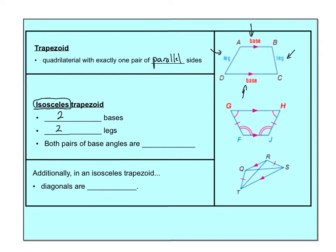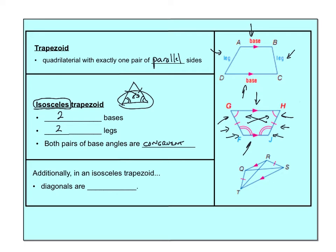An isosceles trapezoid — for those who don't recall, isosceles means two sides are equal, like an isosceles triangle where the base angles are equal. It's a similar idea here: my two legs are congruent, which means my opposite base angles are congruent. And only in an isosceles trapezoid, the diagonals are congruent.